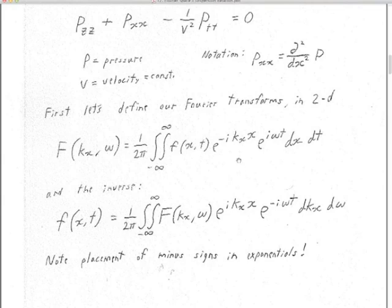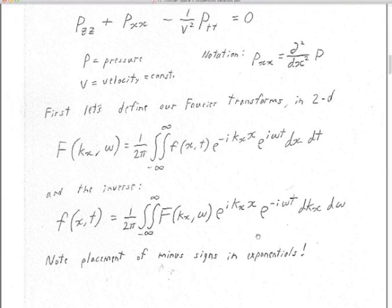Unlike the first half of the class, in this half you can see that Claerbout has included the scale factor 1 over 2π for the continuous transform, on both the forward and the inverse. It's 1 over 2π because there are two integrals here. If there was just one transform in one direction, then it would be 1 over the square root of 2π.